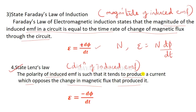The direction of the induced EMF is such that it opposes the change in magnetic flux which produces it. The magnetic flux is opposed. That is Lenz's law — the direction of the induced EMF.